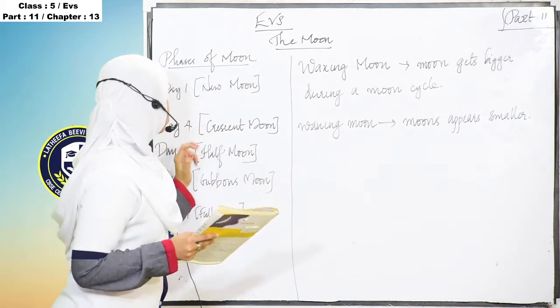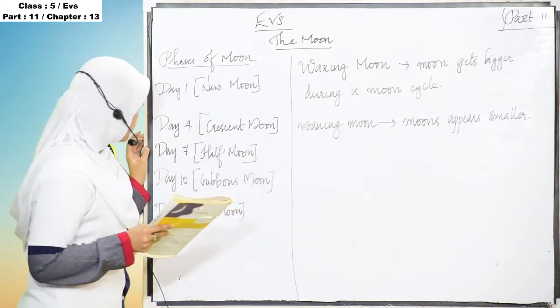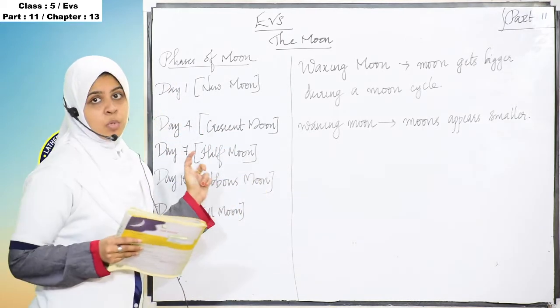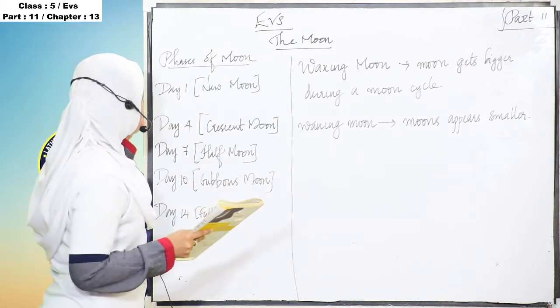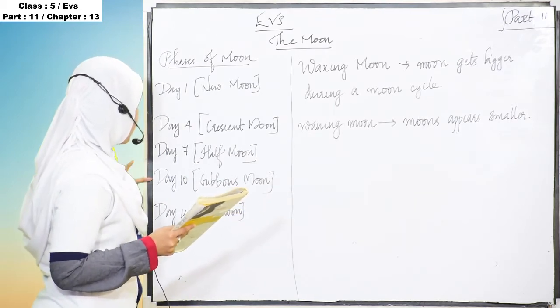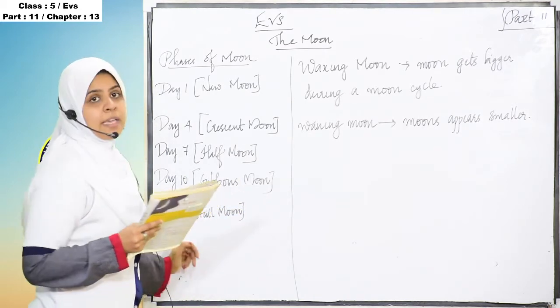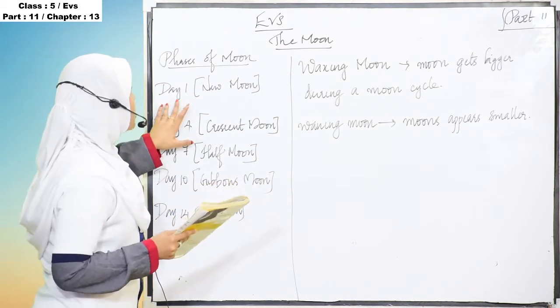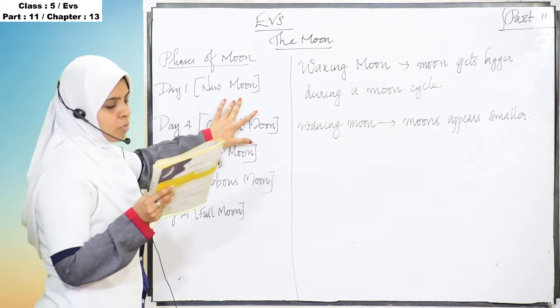There are 5 phases of moon that occur on day 1, day 4, day 7, day 10, and day 14. On day 1 it is new moon.